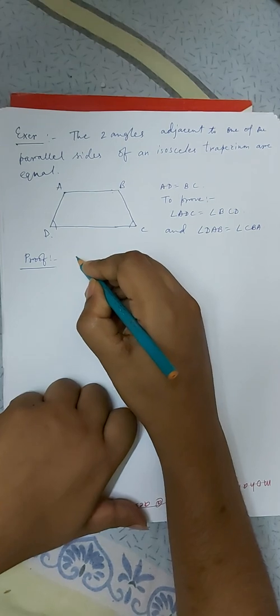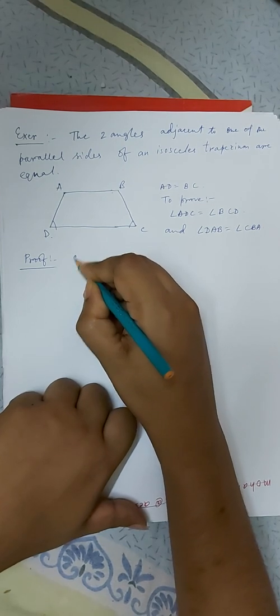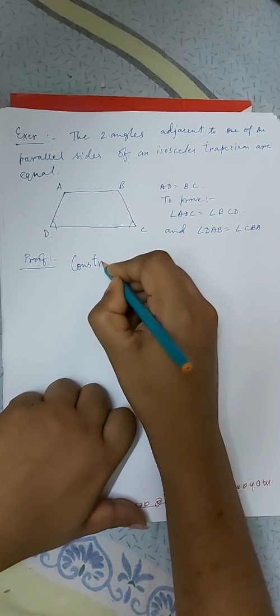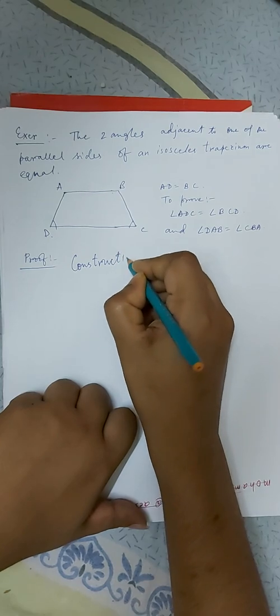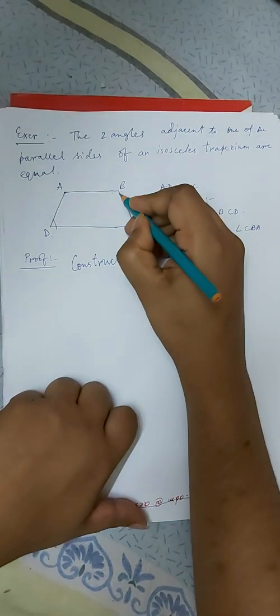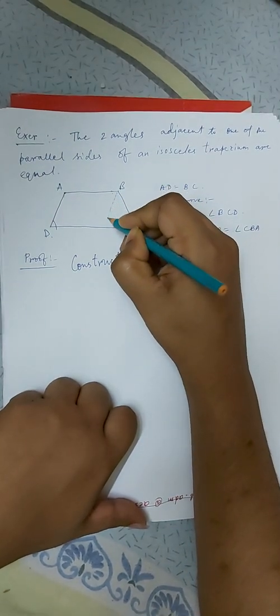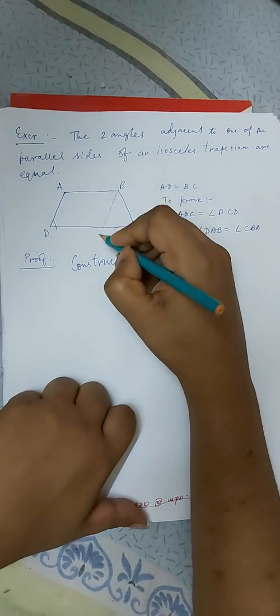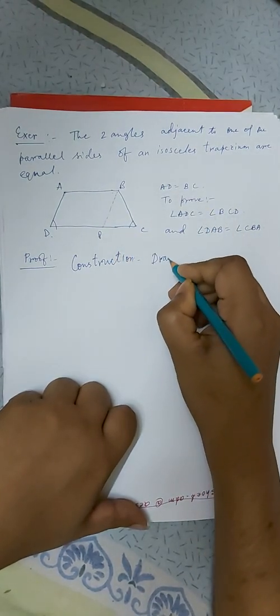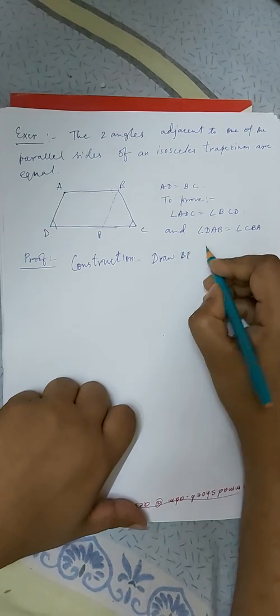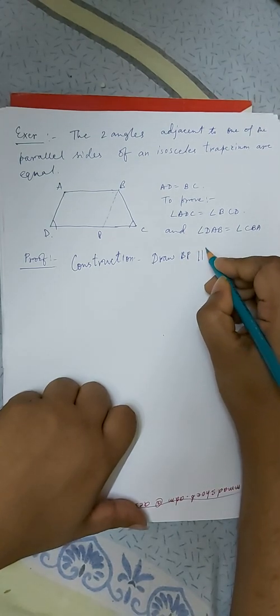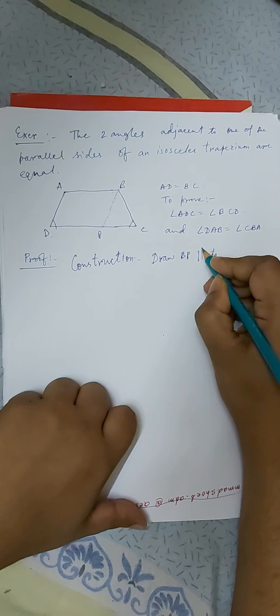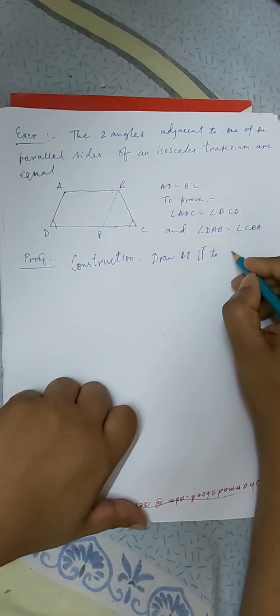First one is construction. The construction is this: draw BP parallel to AD.